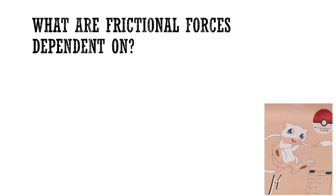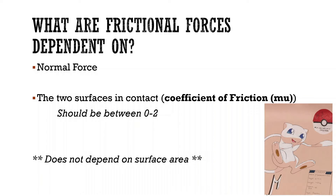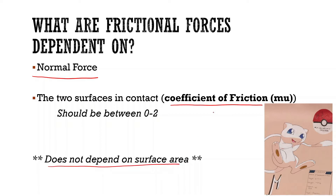What are frictional forces dependent on? They're dependent on two things: the normal force — how much contact they have with the ground — and the coefficient of friction, which is how rough the two surfaces are that are against each other. It does not depend on surface area. We call this coefficient of friction mu.